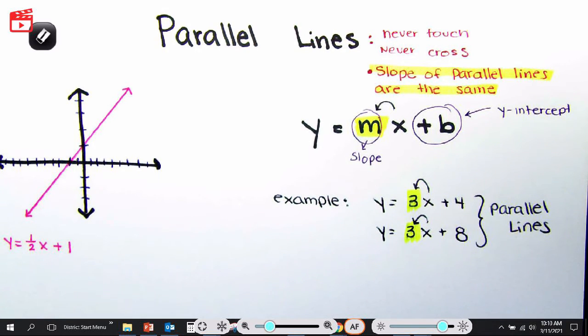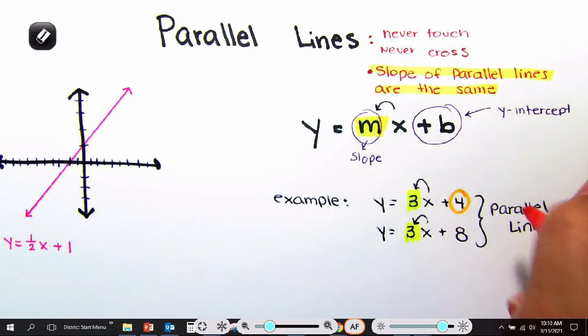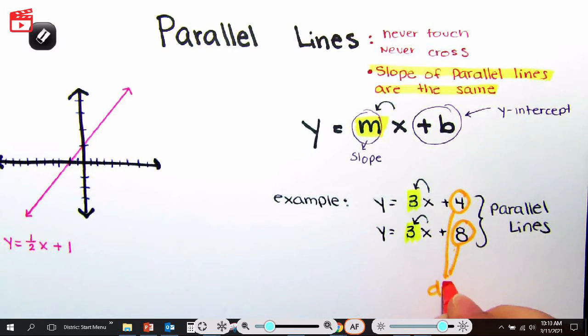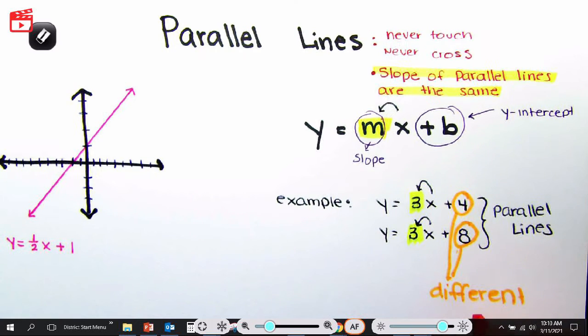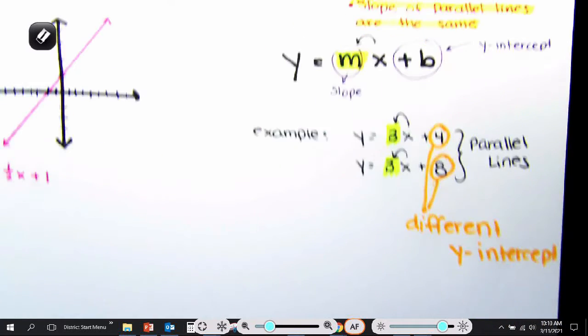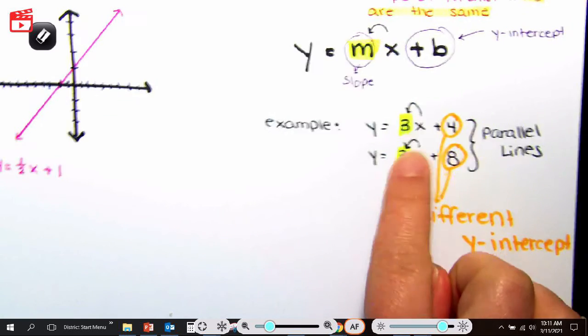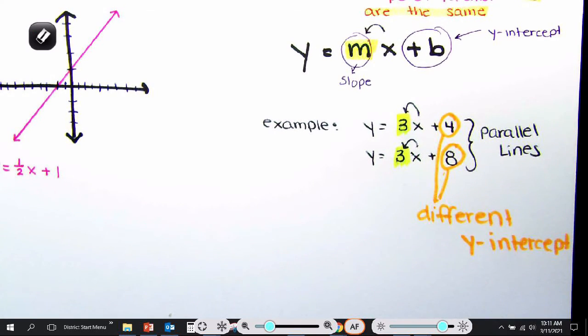Now, notice that your y-intercept, the number after x, these are different. And that is okay. Different y-intercept. And that's okay. You actually kind of want a different y-intercept. Because if these two numbers are the same and these two numbers are the same, then your lines wouldn't be parallel. Your line would be the same. You would have the same line two times. So we don't want the same line. We want a different line.